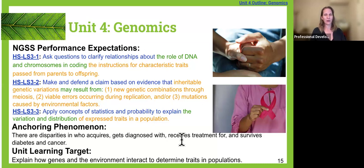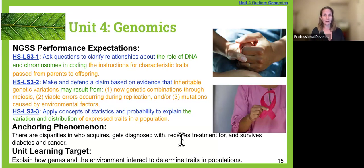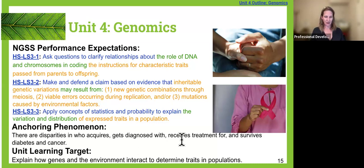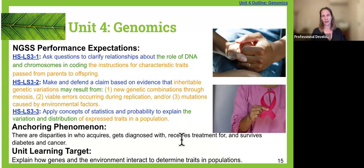There are three NGSS performance expectations covered in this unit. At the end, we'll take a look at opportunities for assessment and how those would be categorized into each performance expectation. We also have an anchoring phenomenon for this unit, which has to do with disease disparity, and Jason will present that in Task 1. The big unit learning target has to do with explaining how genes and the environment interact to determine traits.